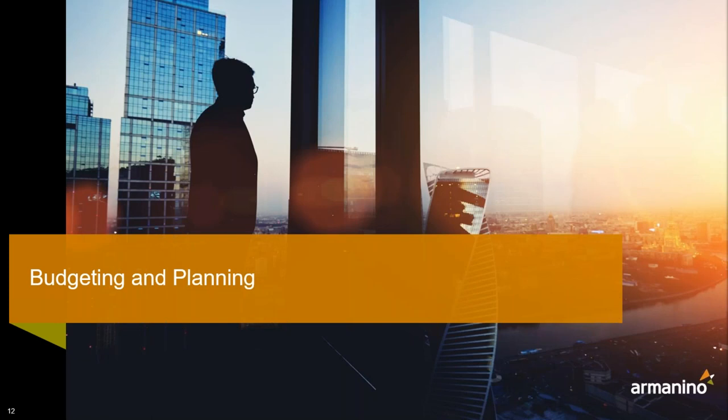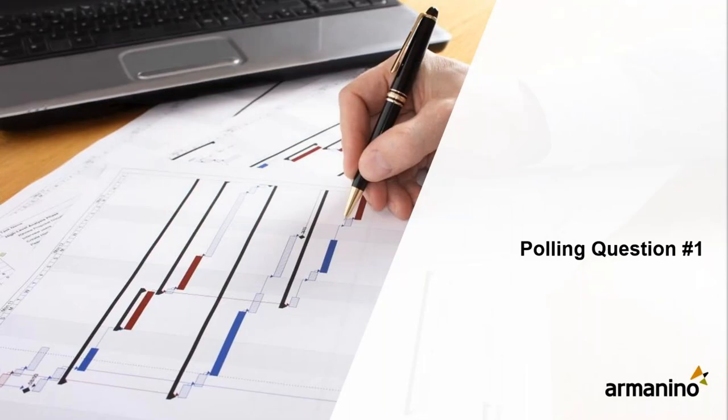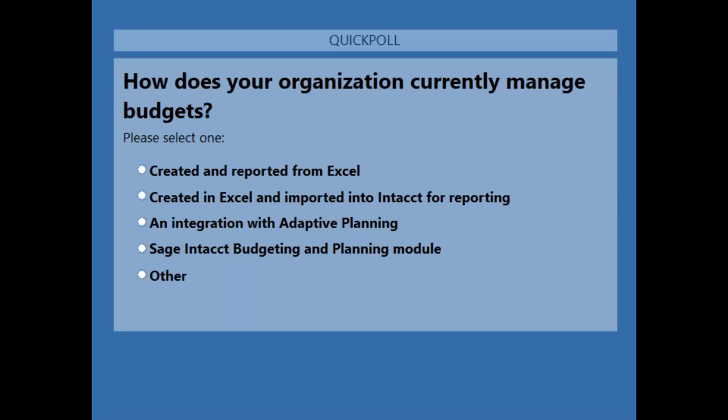Irene Bushnell, senior manager at Armanino, will now cover budgeting and planning. We're launching the first polling question: how does your organization currently manage budgets? Options are: you create and report from Excel; you create in Excel and import into Intact for reporting; you have an integration with Adaptive Planning; you use the Sage Intact Budgeting and Planning module; or other. Results show 29% have an integration with Adaptive Planning, 24% create in Excel and import into Intact, 24% create from Excel individually, 8% use the Sage Intact budgeting and planning module, and 16% said other.